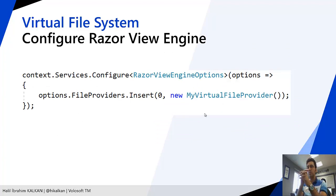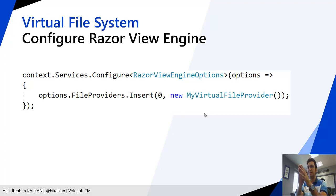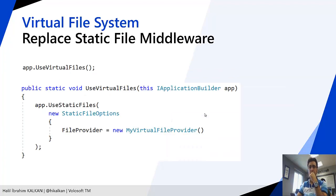Once we implement IFileProvider with a virtual file provider, we should replace the Razor View Engine's file provider with our custom file provider. To do that, we configure Razor View Engine options by adding a new file provider to the file providers list. In the sample, we added it as the first file provider, so it has the highest priority. We should also configure UseStaticFiles middleware to use our custom file provider, which is easy because UseStaticFiles accepts a StaticFileOptions object with a file provider property where we can set any class implementing IFileProvider.